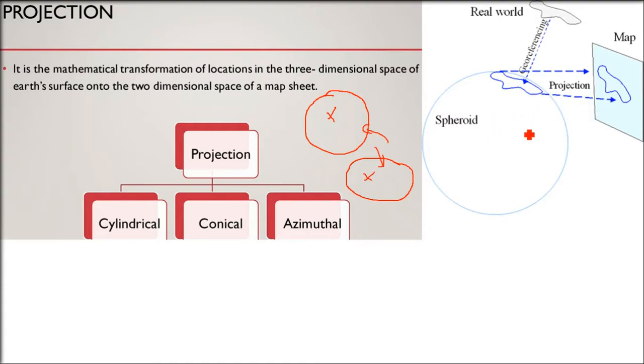So this globe of earth is the real world. The actual scenario of the earth, the actual terrain of the earth - how can this be presented on a 2D paper, on a 2D screen? So this 3D to 2D conversion is projection.